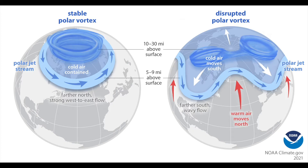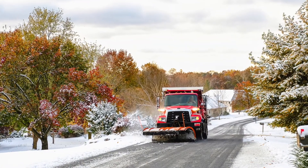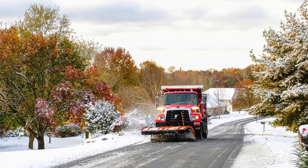Most importantly, because the polar vortex affects the jet stream for days to weeks, when we see the winds changing in the polar stratosphere, we can predict that really cold winter weather is more likely for certain regions far in advance. This allows us to plan ahead by making sure power sources are ready to support more energy use and transportation managers are prepared to treat roads for ice and snow.